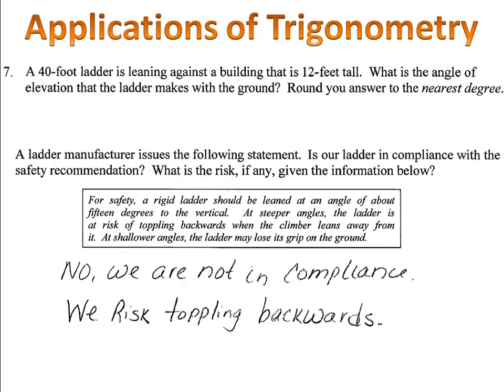Well, it says that we should have an angle of no more than 15 degrees. Our angle happens to be 17 degrees, which is a problem. And therefore, we're not in compliance. We run the risk of toppling over.